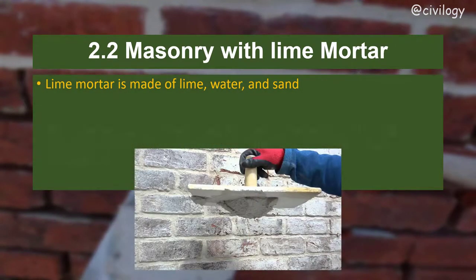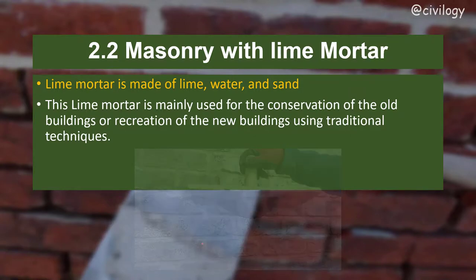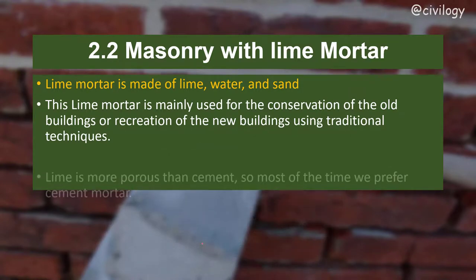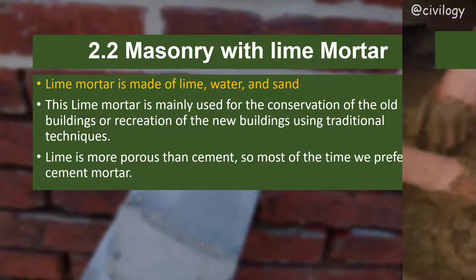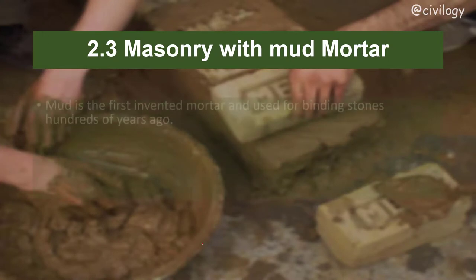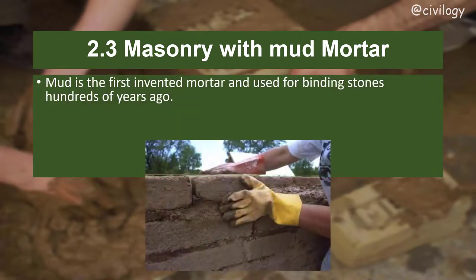Masonry with lime mortar: lime mortar is made of lime, water, and sand. It is mainly used for conservation of old buildings and recreation of new buildings using traditional techniques. Lime is more porous than cement, which is why cement mortar is generally preferred.